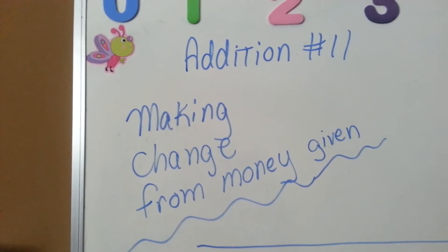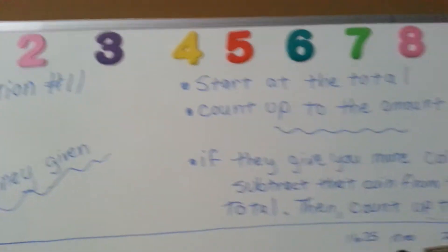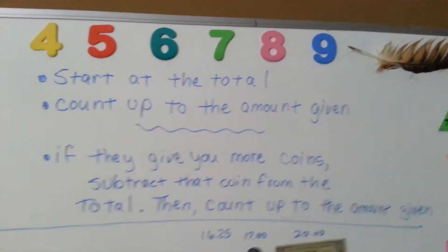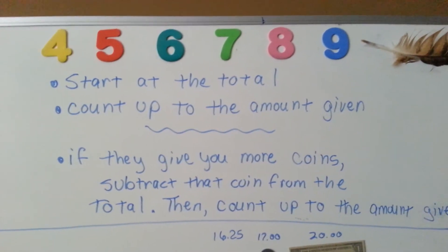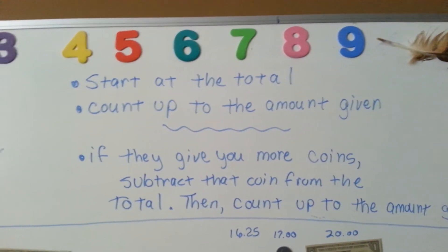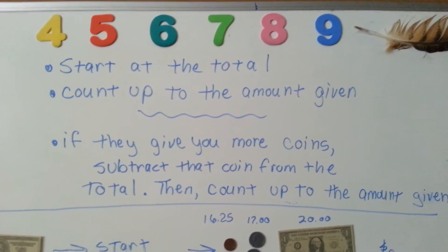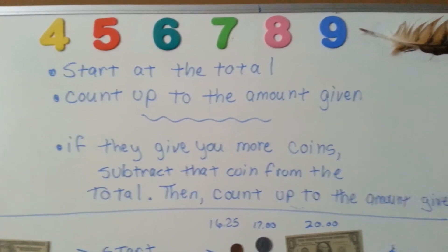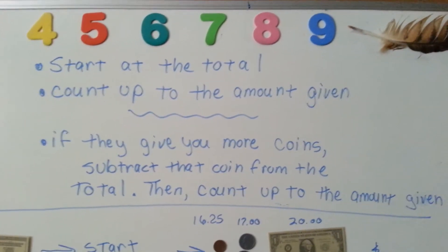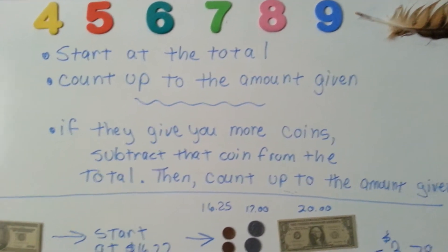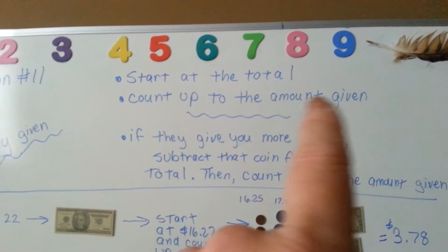Edition number 11: making change from money given. When you have a job and you're working as a cashier, you're expected to give change. A lot of the machines nowadays will tell you what the change is supposed to be, but a good cashier will be able to give the change without being told mechanically what the answer is — smart enough to give it even if the power went out. The first thing you're going to do is start at the total and count up to the amount given.